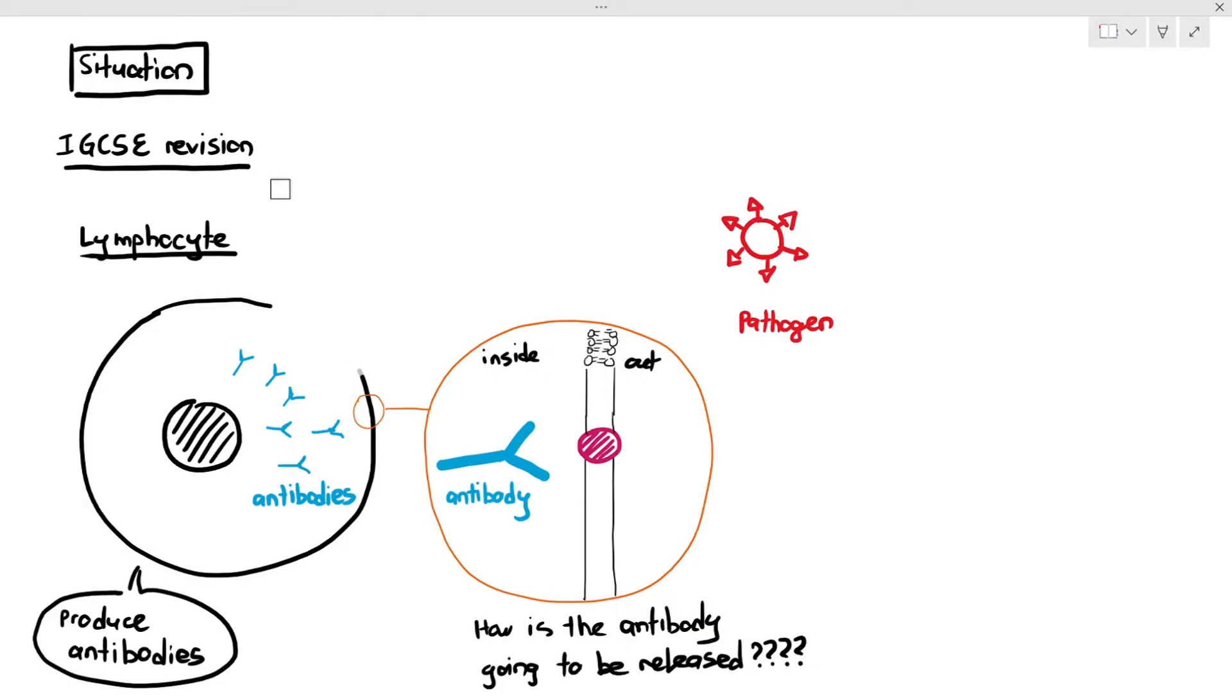Then some of my students will say, maybe the cell membrane just breaks and lets the antibodies out. But if the cell membrane breaks, then your lymphocytes might die. So we have a problem here. How are the antibodies going to go out of the cell?